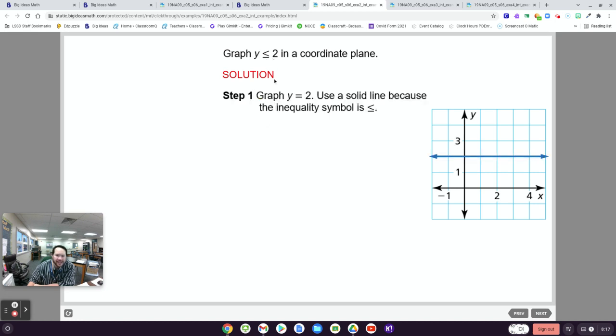If this were y is less than 2, we'd use a dotted line. But because it can also equal 2, this line will be a solid line. So anytime you have a less than or equal to, greater than or equal to, solid line. If it's just less than or greater than, dotted line.